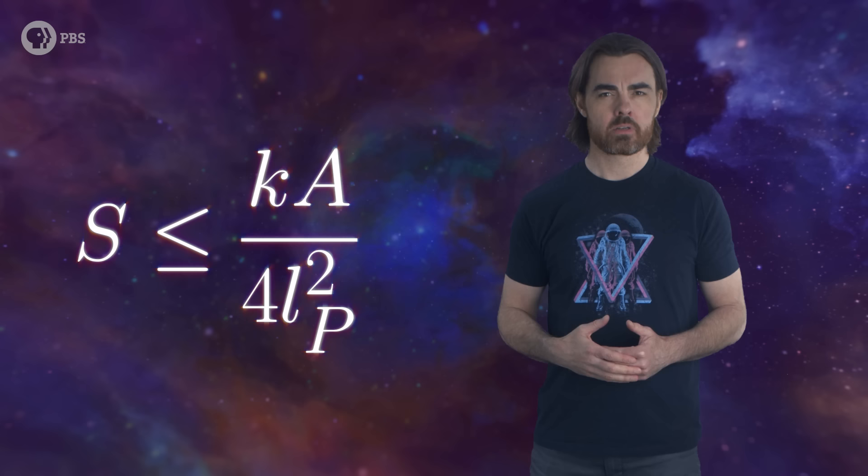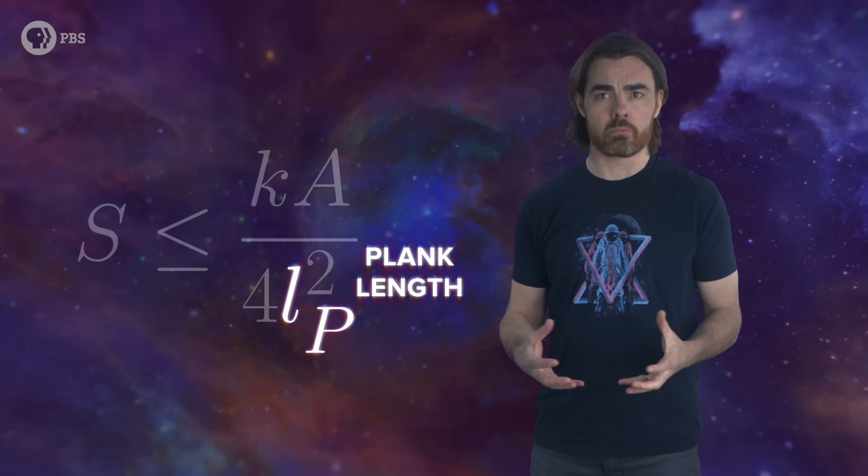A black hole's entropy represents the amount of quantum information of everything that ever fell into it. This Bekenstein bound represents the maximum possible entropy of any volume of space. Oddly, that maximum is proportional to the surface area of that space, not its volume. That was surprising. Surely the information in a volume depends on that volume, not one bit per pixel on the surface.